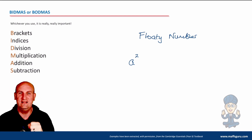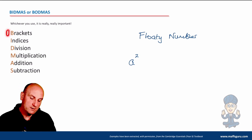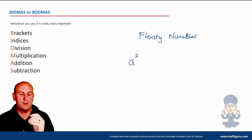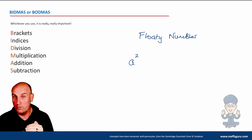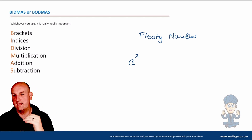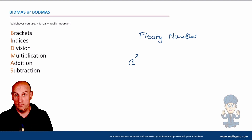Why do we call this so many different things? Because someone was trying to trick us with the language. But generally speaking, this is the order when given a sum or equation to solve: deal with brackets first, then the floaty numbers, then division, multiplication, addition, and subtraction. That becomes really important as we work through this.